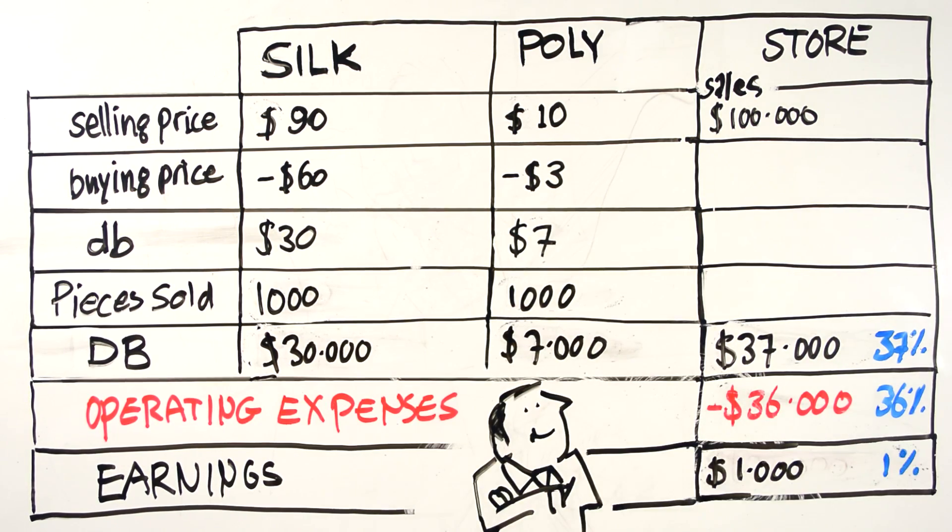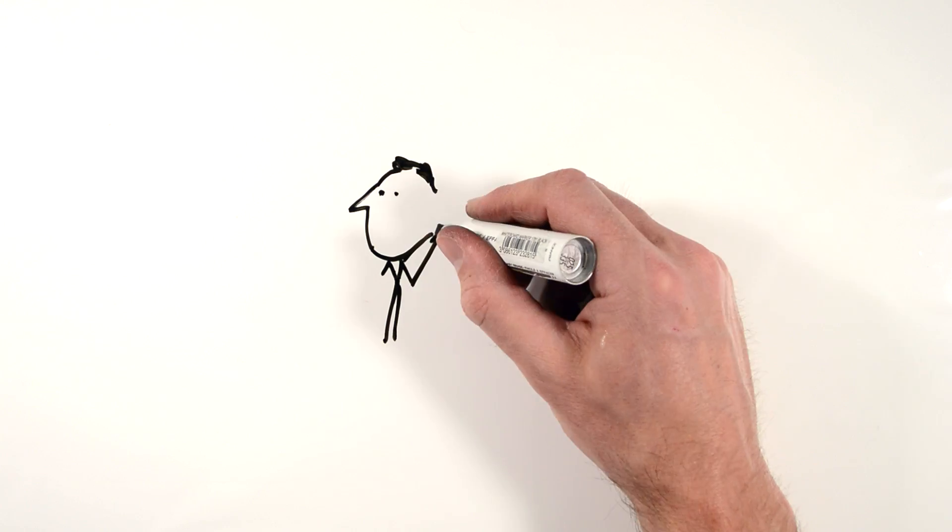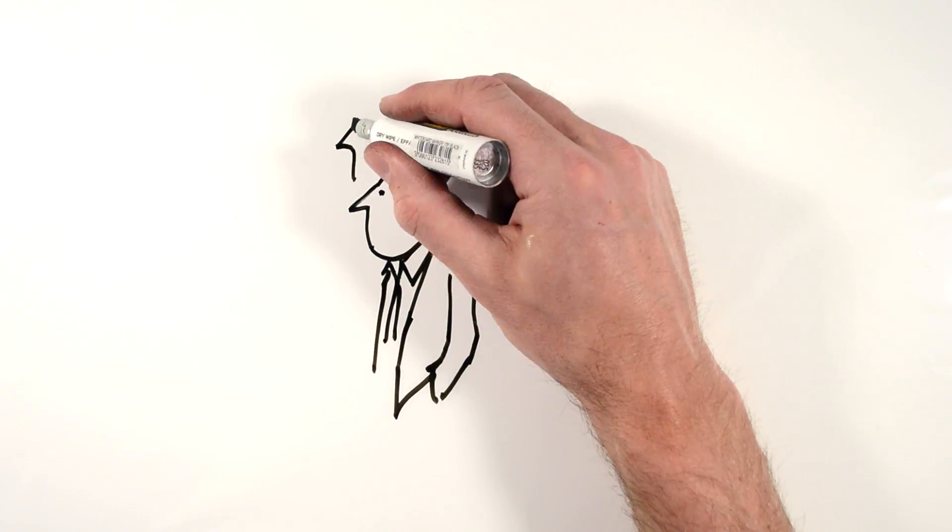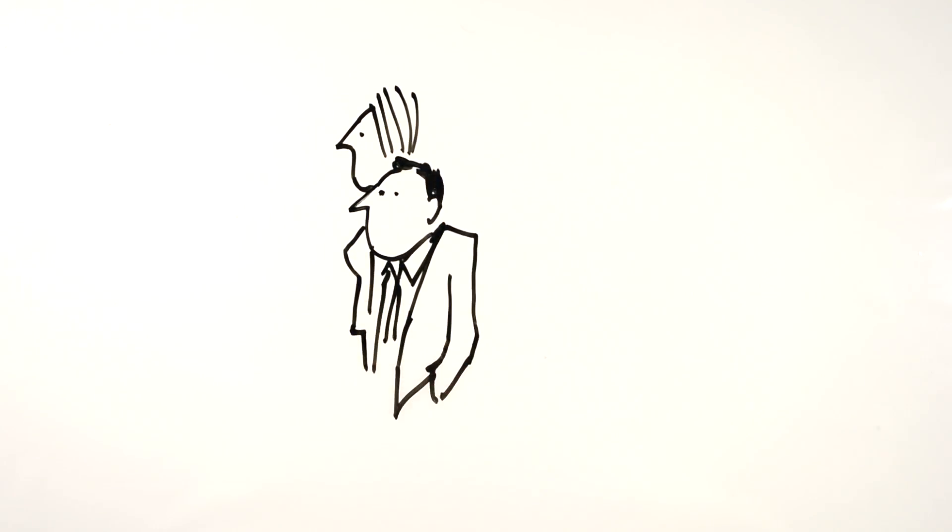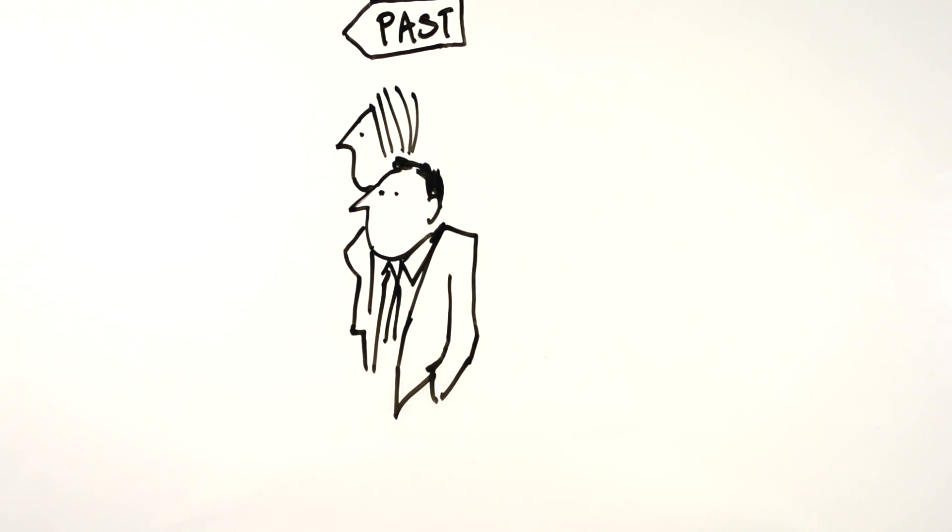Sales were $100,000 and expenses were 36% of sales. When you're looking back at your financial statements, the average margin percentage must be higher than the expense percentage, otherwise you made a loss.